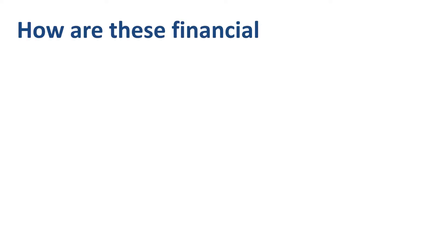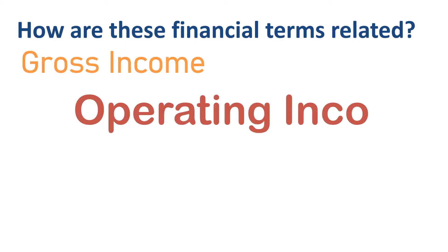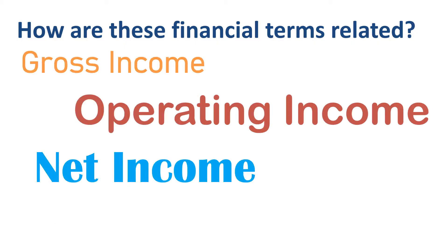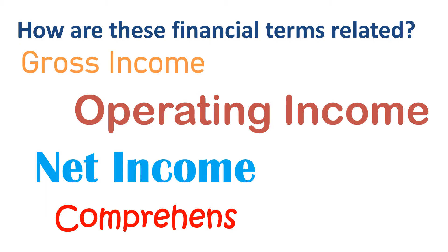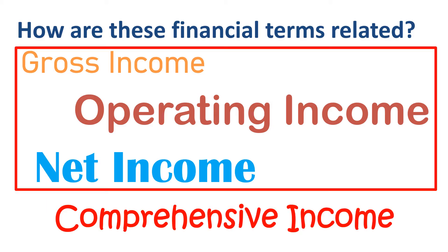How are the following financial terms related? Gross income, operating income, net income, comprehensive income? The first three of these are all in the income statement. The lower you go in the income statement, the more expense line items you deduct.